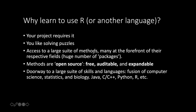R has access to a very large suite of methods, and many of these are released by the top people in their respective fields. You'll read papers where the algorithm a researcher developed is available by installing an R package. Methods are also open source — they're free, which is important for equity in science. They're auditable, so you can see what they're doing under the hood, and they're expandable, so you can build on them and funnel one method into others.